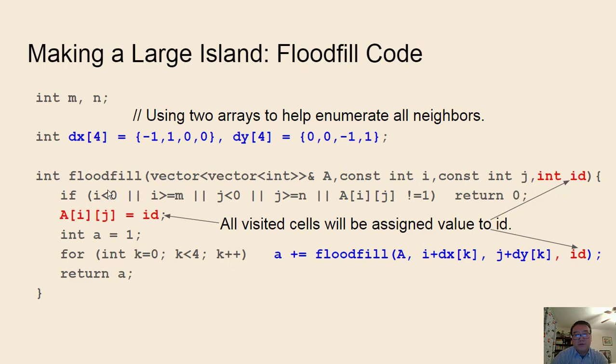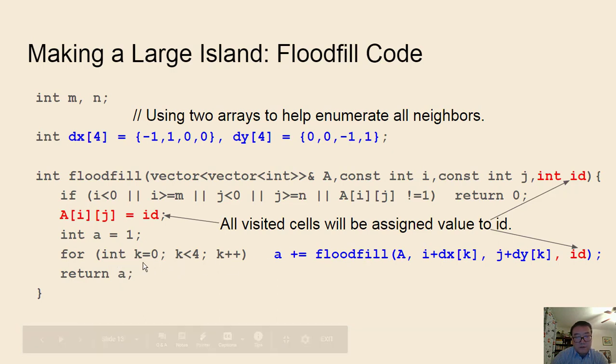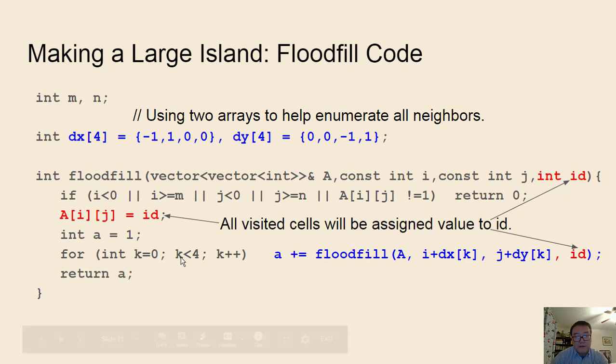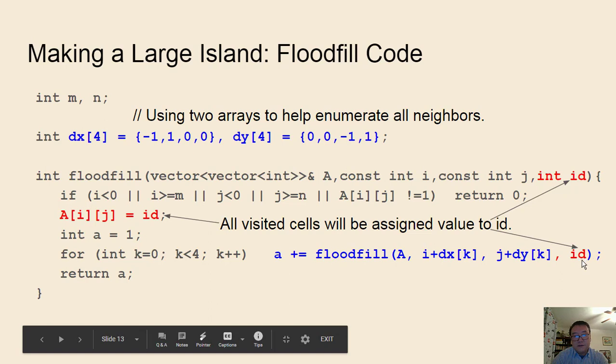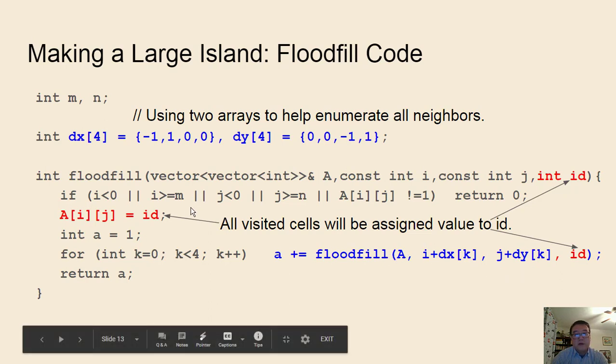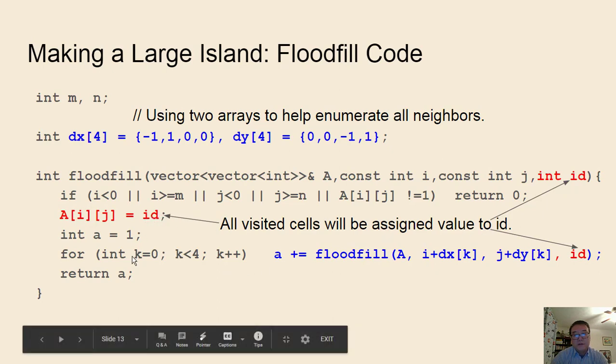The code here is in C++, but this is essentially a 2D array passed in, and the two indices, and also the ID is the value we want to overwrite the current island to. This is similar to the DFS code we talked about before. Here we just rewrite this A[i][j] to be ID. And we calculate the area because this flood fill will return the area of the current island.